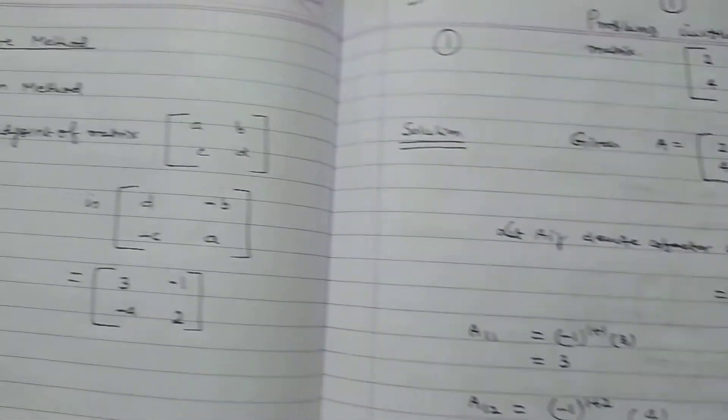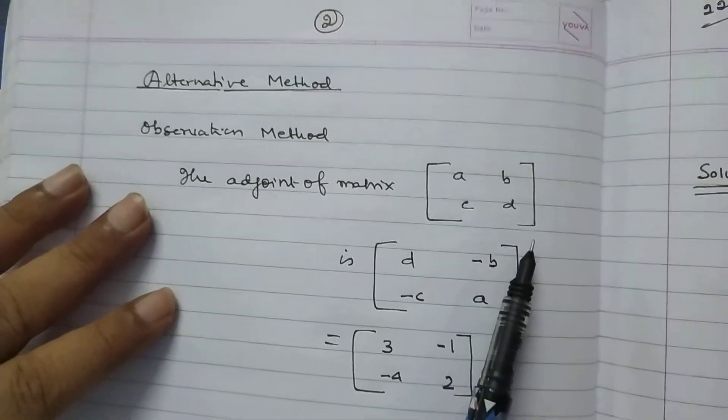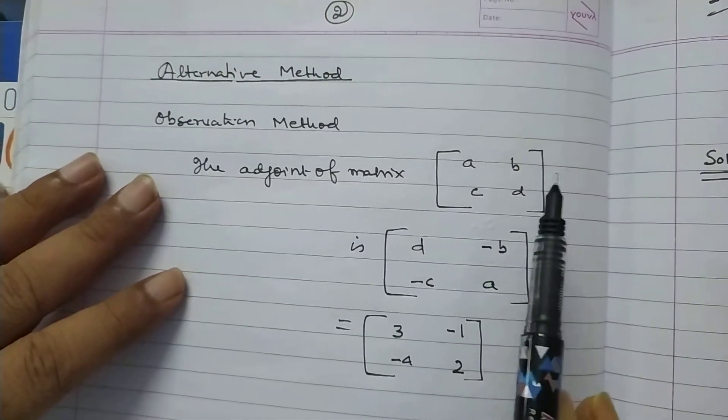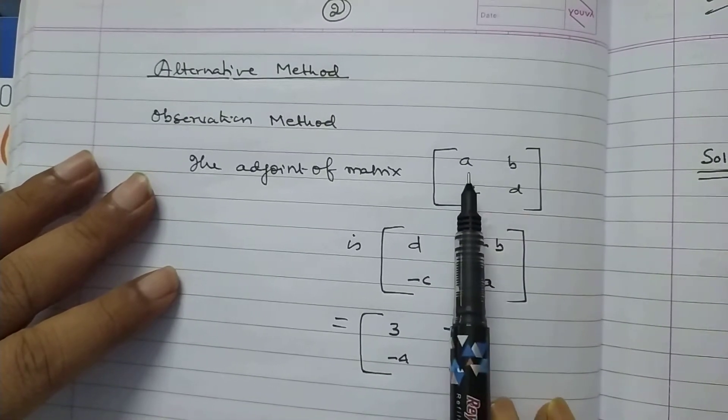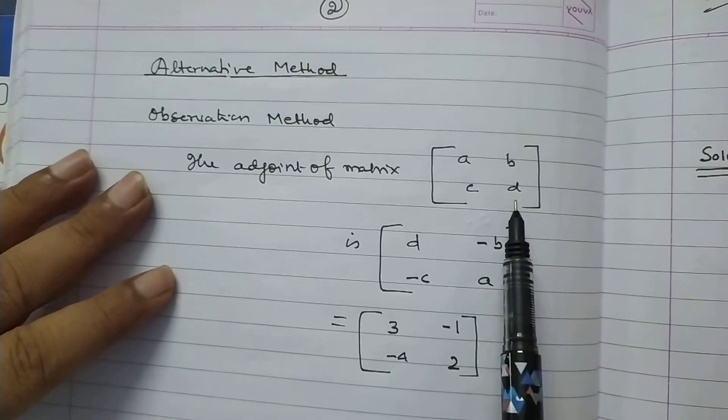This is a long method. Now, you can solve this problem by shortcut method also. Suppose, we have to find the adjoint of matrix having elements A, B, C, D.